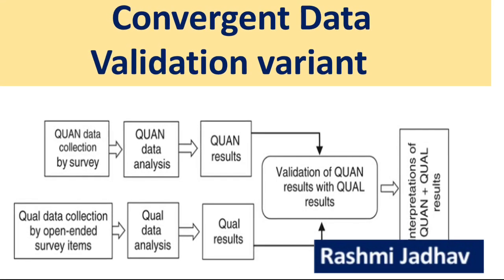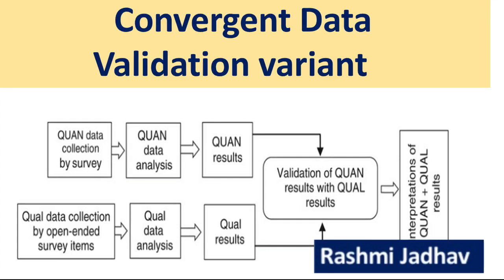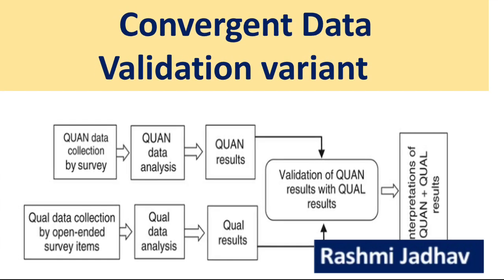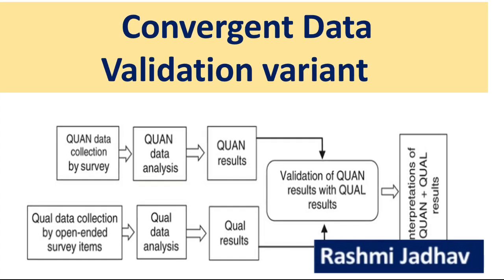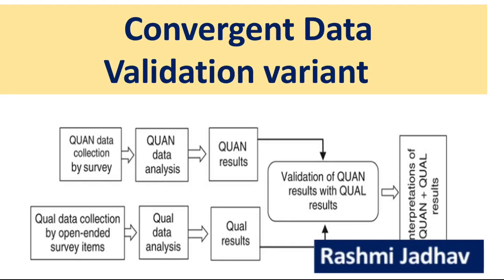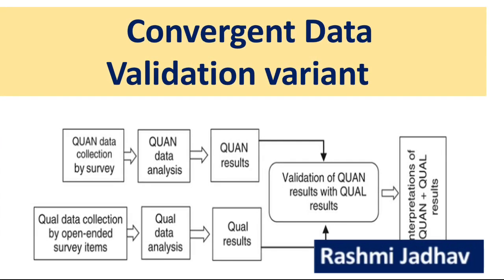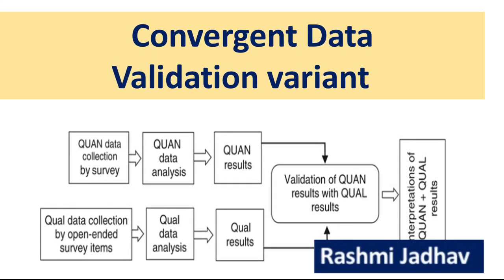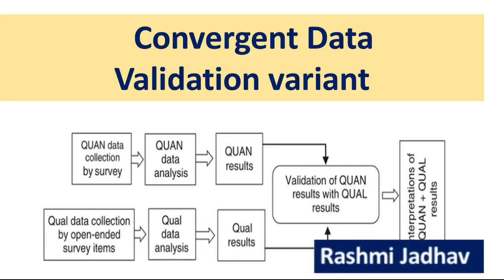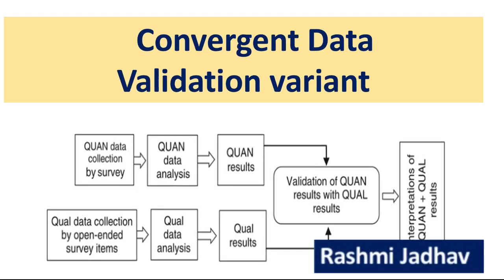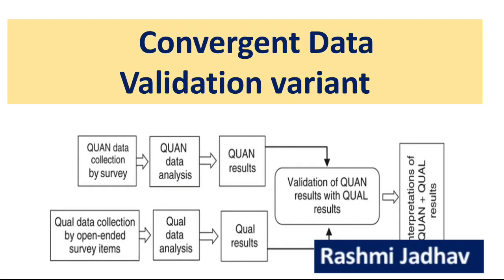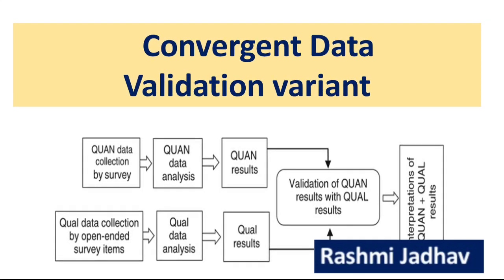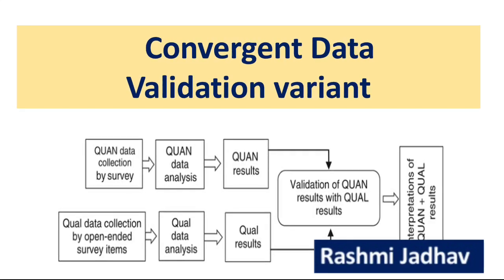In the third type, the convergent data validation variant, we perform validation of the results. We collect quantitative and qualitative data separately, perform data analysis, check the results, and then validate — validating quantitative results with the qualitative results — to arrive at the final results.